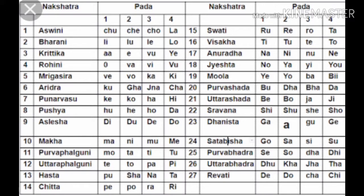Now, why are Nakshatras important? In the olden days, when a child was born, there was a tradition to give him a name as per the Nakshatra. For example, if a child is born in the 1st Pada of Ashwini Nakshatra, his name should start with 'Chu'. If born in the 1st Pada of Bharani, the name should start with 'Li'. This is how Nakshatras were used to determine the name of a person. Alternatively, if you knew the name of a person in the olden times, you could determine his Nakshatra.